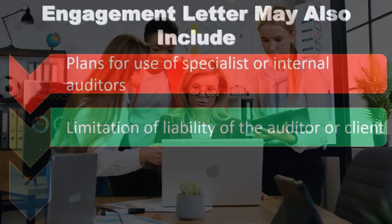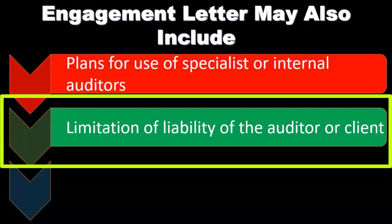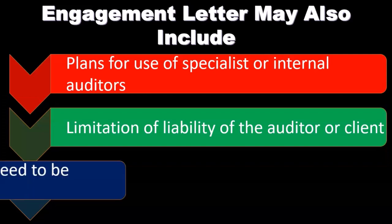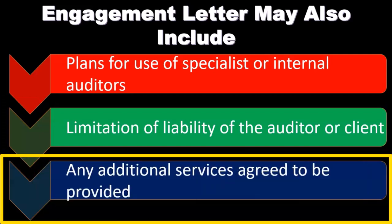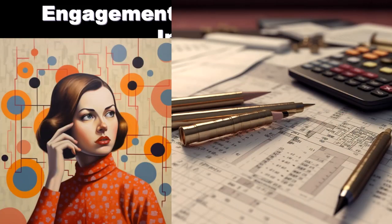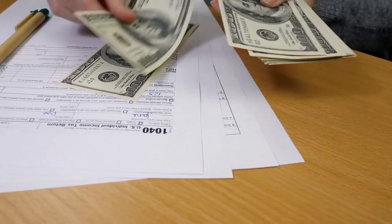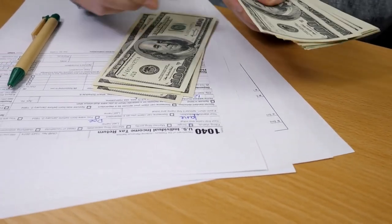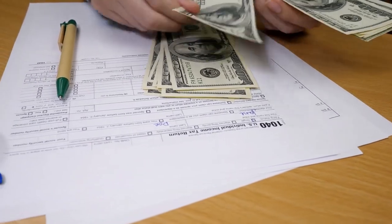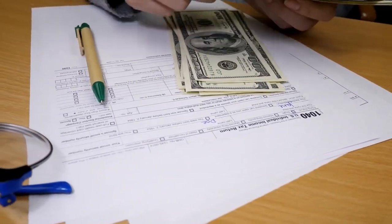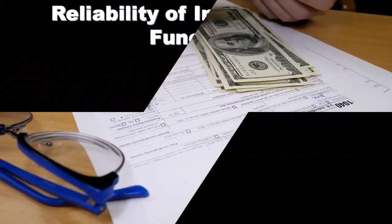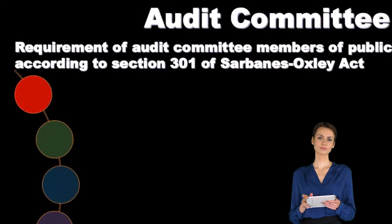Additional optional items in the engagement letter include: limitation of liability of the auditor or client — essentially a disclaimer — and any additional services agreed to be provided beyond the audit. If you're also doing tax work, it may be best to have a separate engagement letter for each engagement, so you don't blend them together in the mind of the client or within the CPA firm.